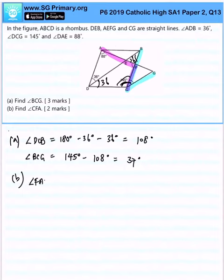After which, angle ABF will be easily 180 degrees minus 108 degrees, giving us 72 degrees.